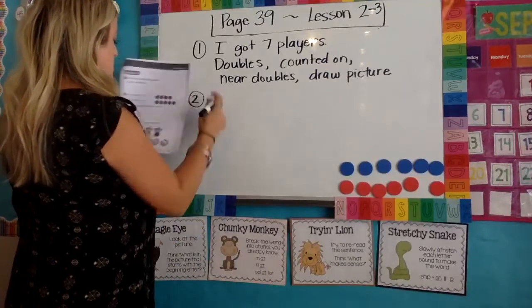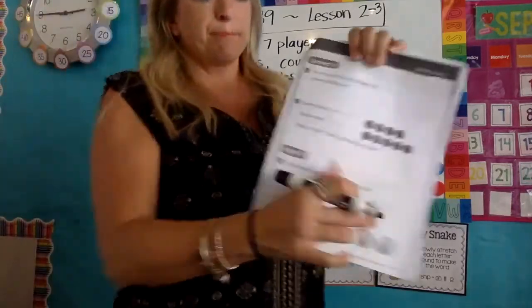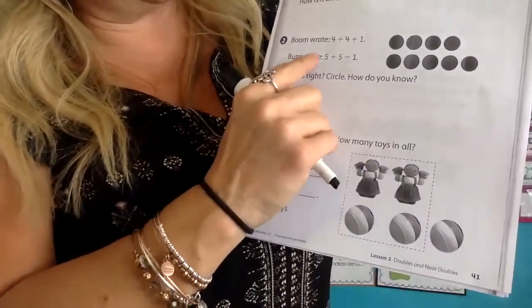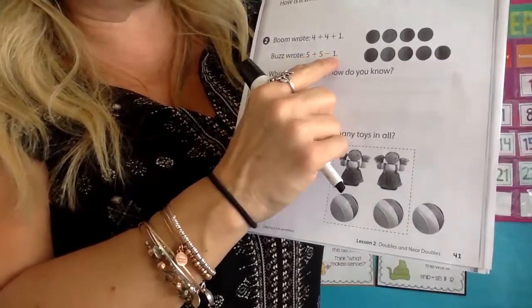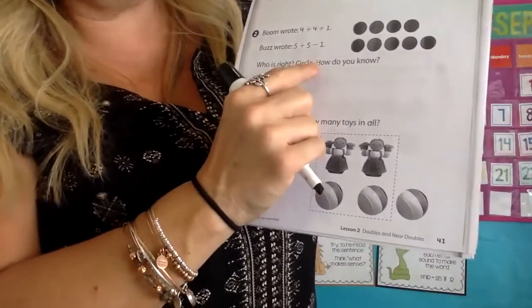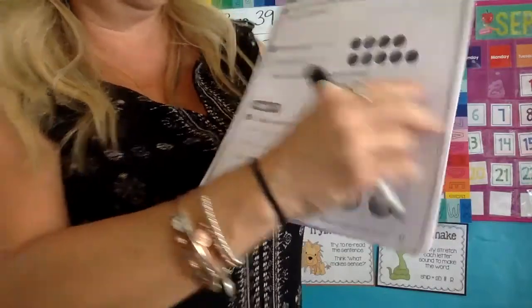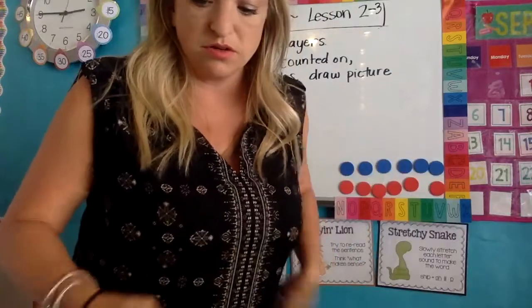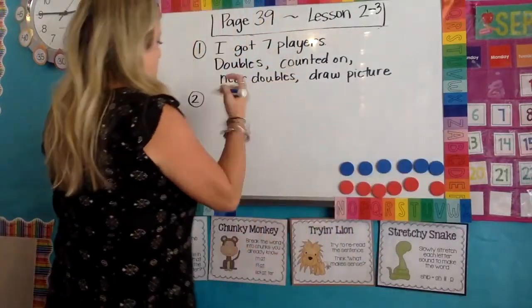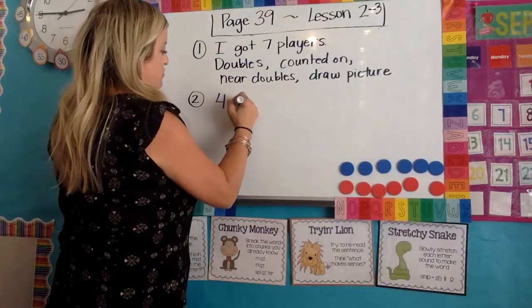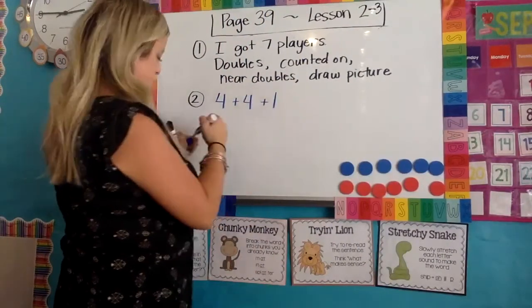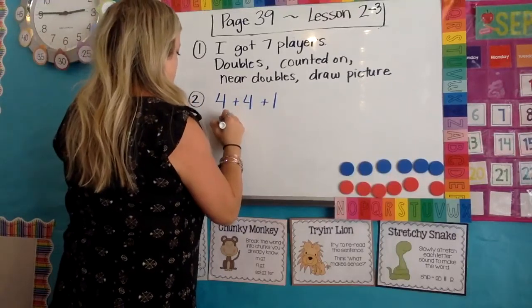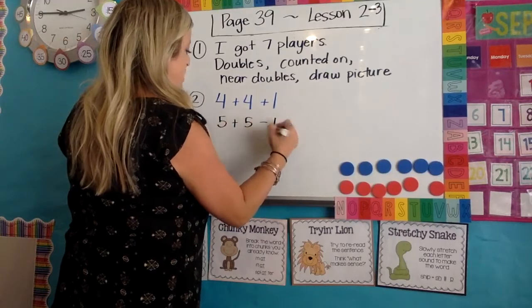Number two. Boom wrote four plus four plus one. Buzz wrote five plus five minus one. Who is right? Circle. How do you know? Miss Lamb needs to build — I'm going to write the two different strategies: four plus four plus one, and five plus five minus one.